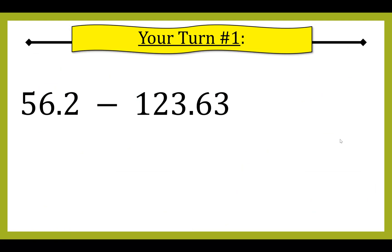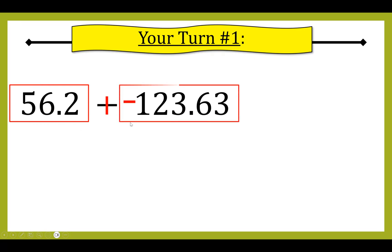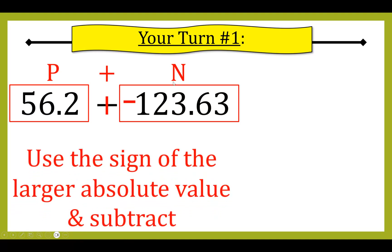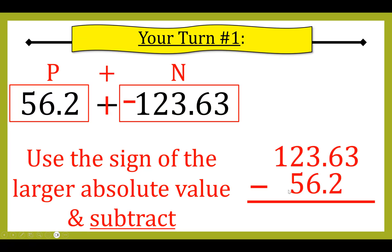Now it's your turn for number one — pause the video, do the problem on your own, then unpause to check your work. The problem is 56.2 minus 123.63. This is a subtraction problem, so I change it to addition by adding the opposite. I box my numbers: 56.2 and negative 123.63 — a positive plus a negative.